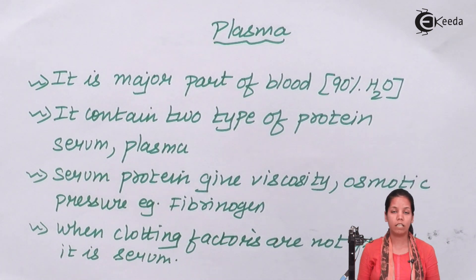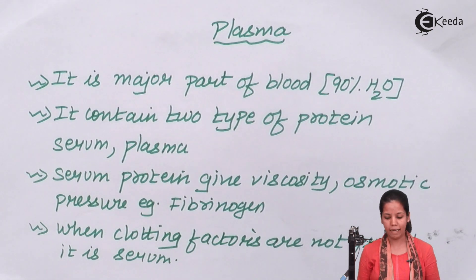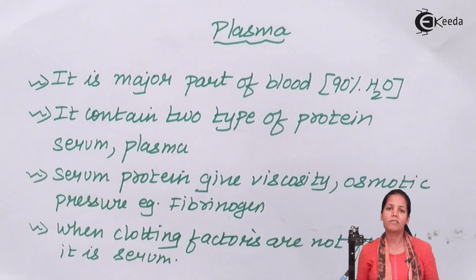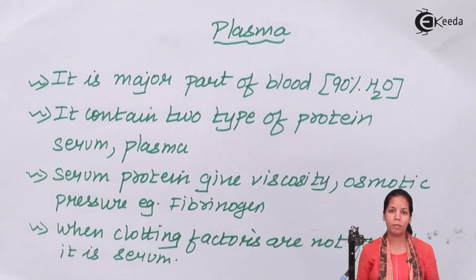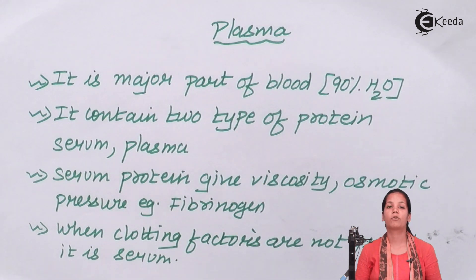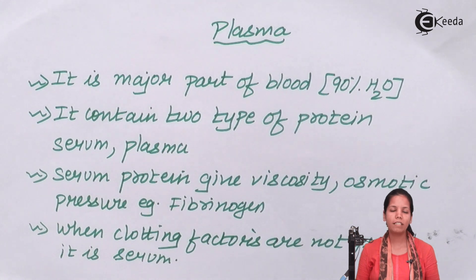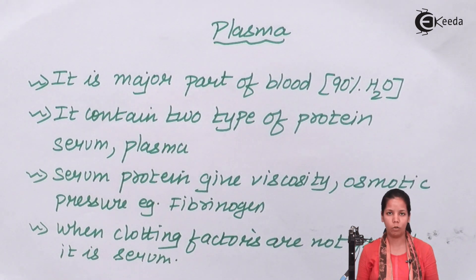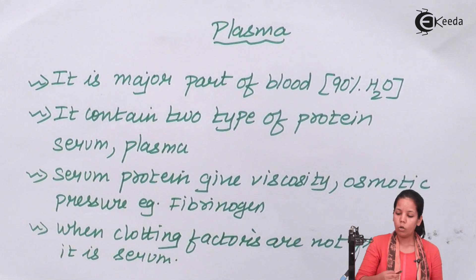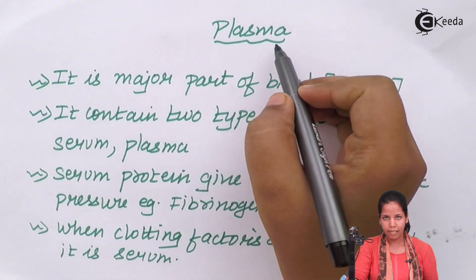Serum proteins give viscosity, maintain osmotic balance, and one example is fibrinogen. We know that once you have a cut on your body, blood is going to coagulate. This clotting mechanism is carried out by clotting factors, and fibrinogen is one of the most crucial ones.